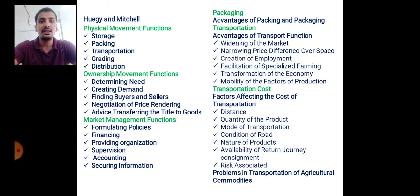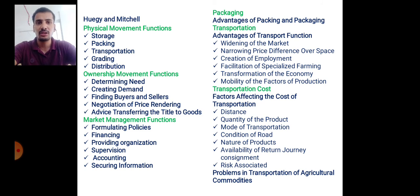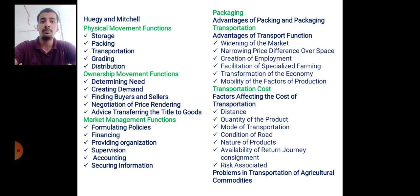Next is Hujay and Mitchell's classification of marketing functions. According to them, marketing functions are classified into three types: physical movement functions, ownership movement functions, and market management functions. Physical movement functions include storage, packaging, transportation, grading, and distribution.